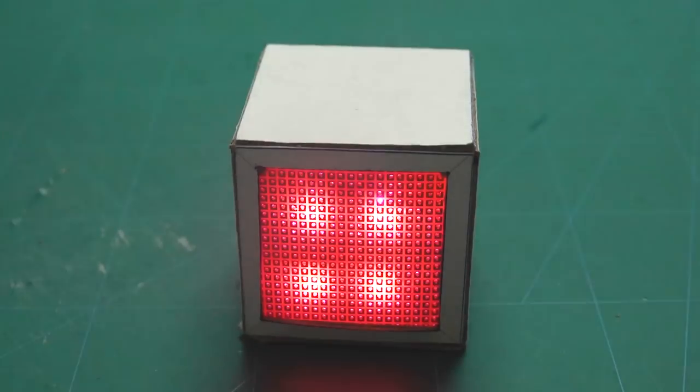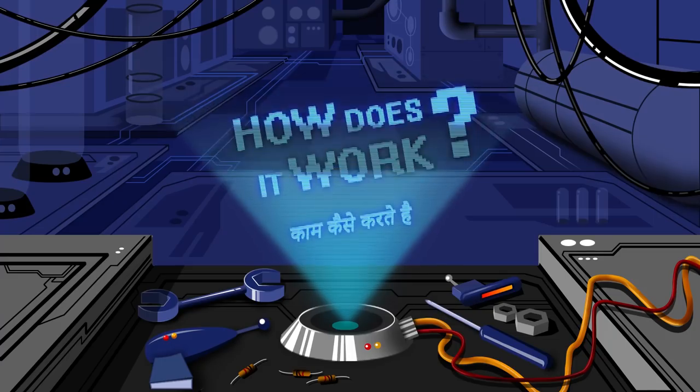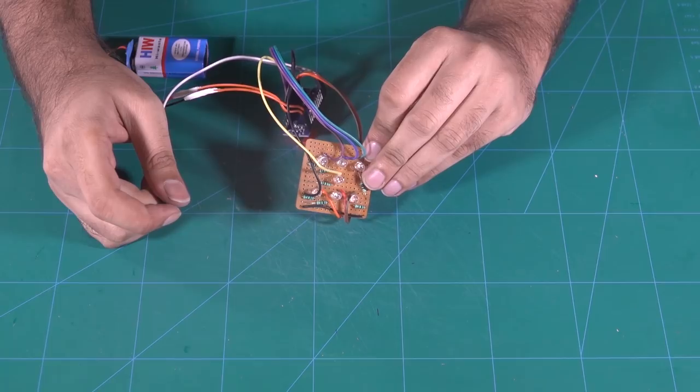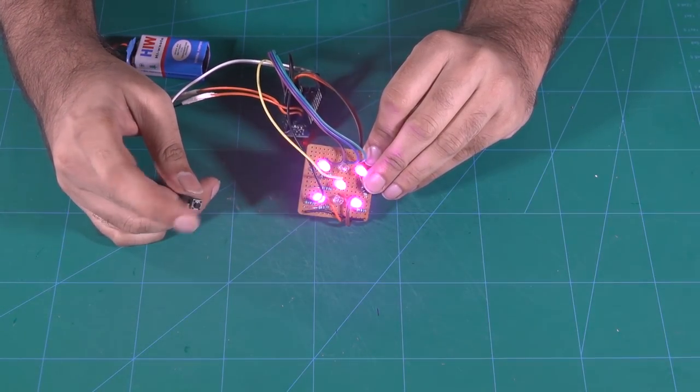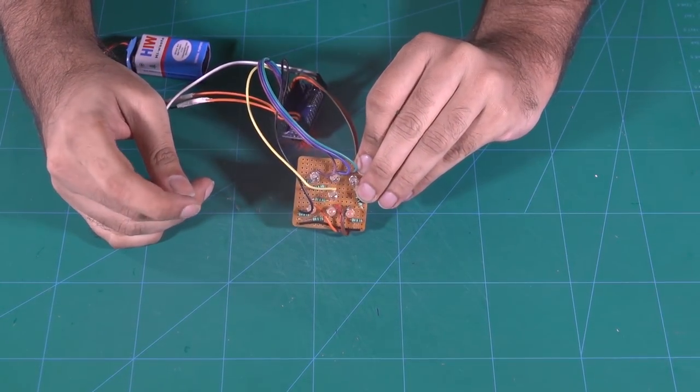When you press the button, the Arduino generates a random number which is then displayed using the LEDs.